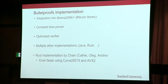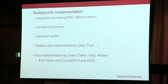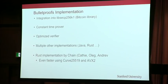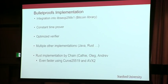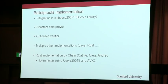We also implemented this into the Bitcoin core library, libsecp256k1, with a constant-time prover and a lot of work optimizing the verifier. However, Kathy, Oleg, and Andrej implemented this in Rust using Curve25519, spent a lot of time optimizing everything, and it might be up to a factor of two even faster than the libsecp implementation.